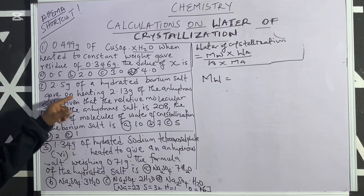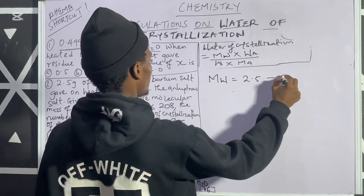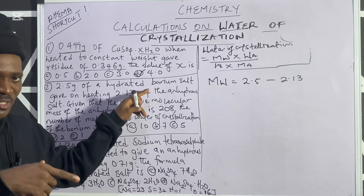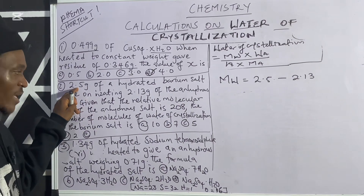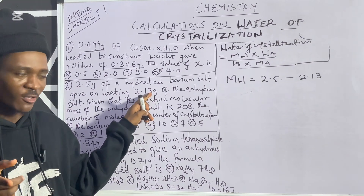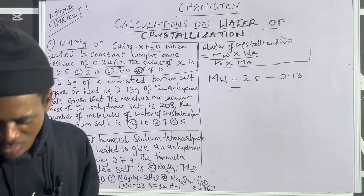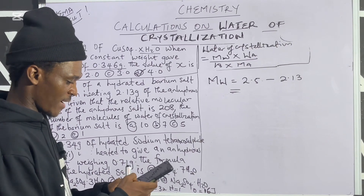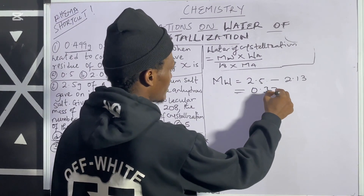How do we obtain the mass of water? We subtract the mass of anhydrous from the mass of hydrated: 2.5 minus 2.13. Note that when there was water the mass was 2.5 grams (higher); after heating it reduced to 2.13 grams (lower), meaning water was removed. So mass of water = 2.5 − 2.13 = 0.37 grams.